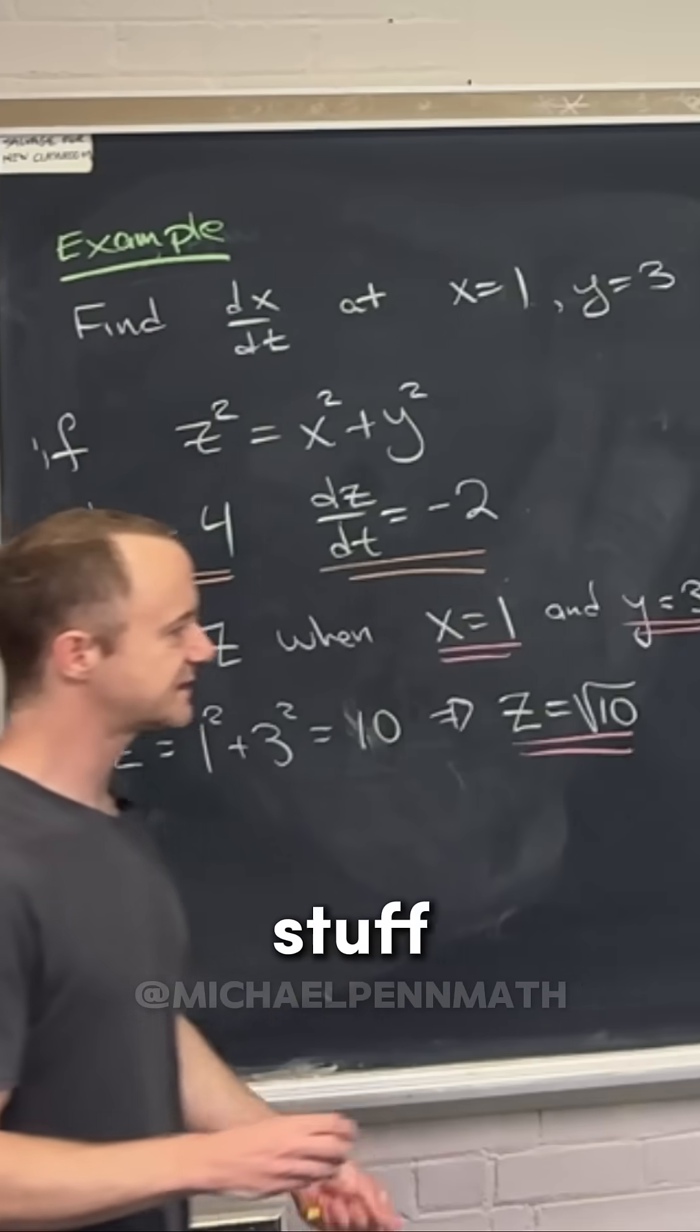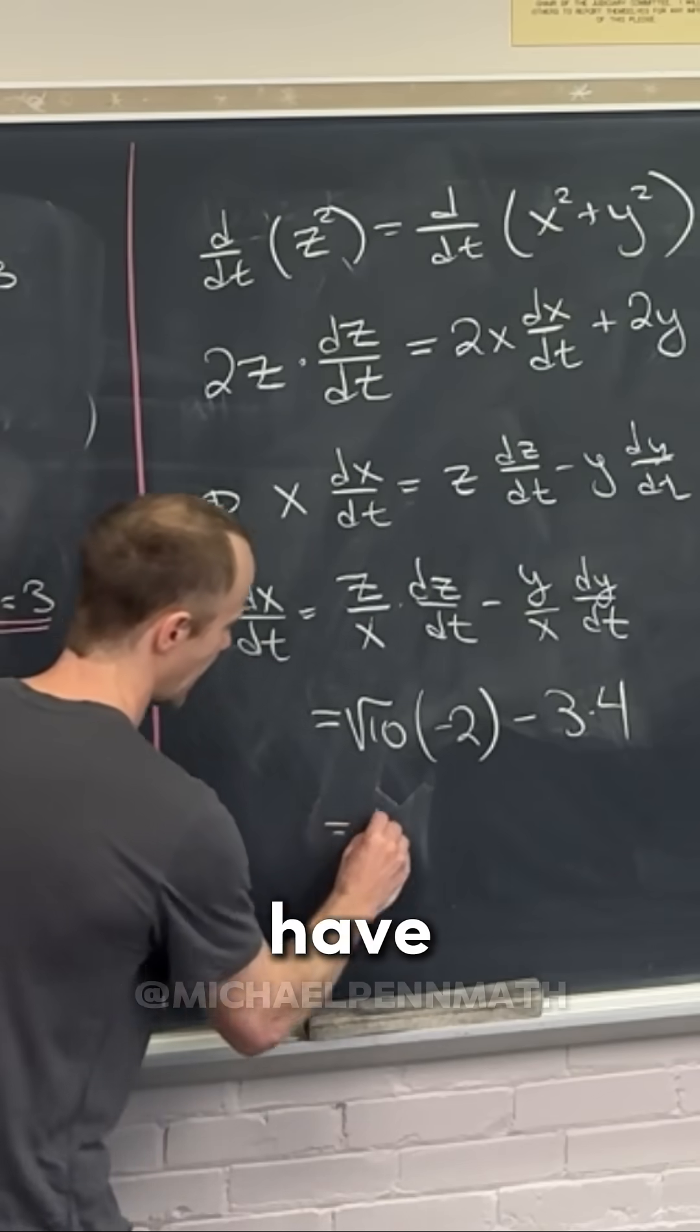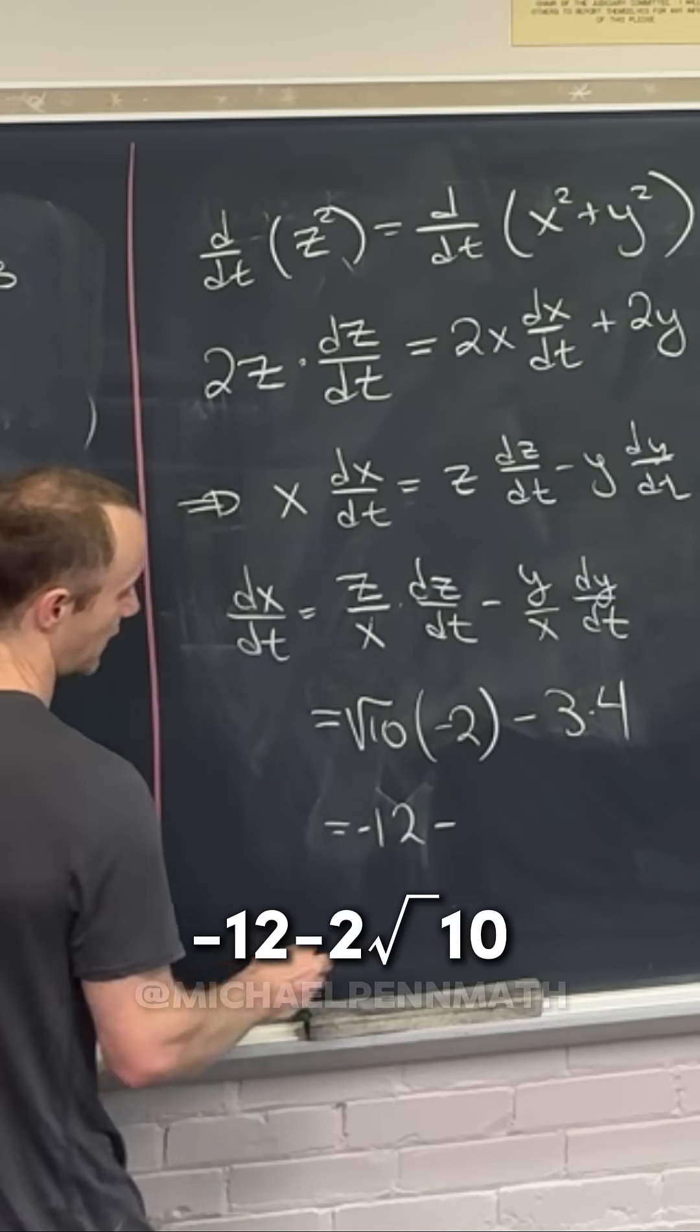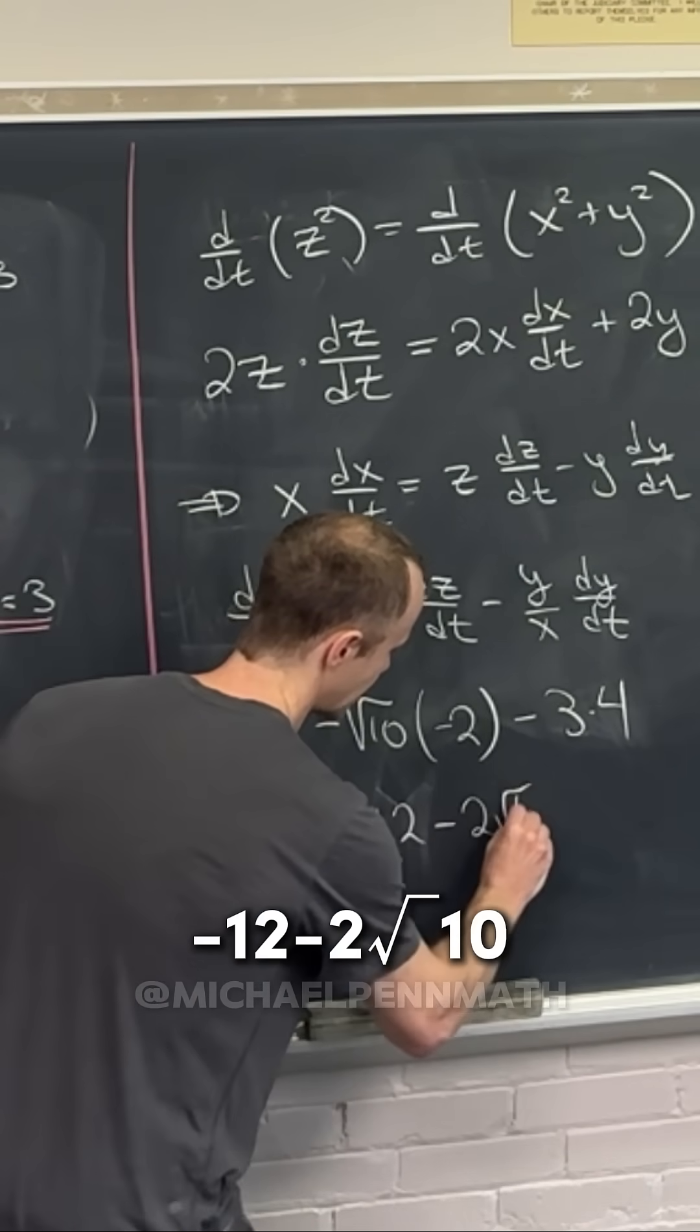And then, I don't know, we could move some stuff around if we wanted to, and we'd be given something like 12 minus, sorry, negative 12 minus 2 times the square root of 10.